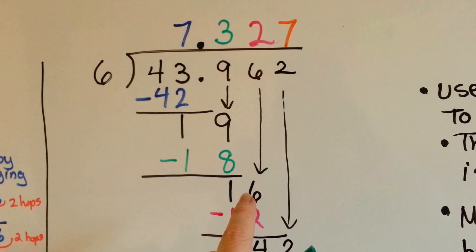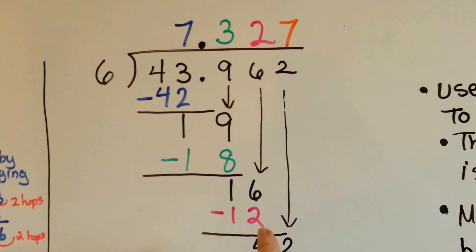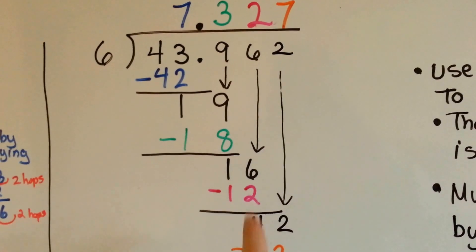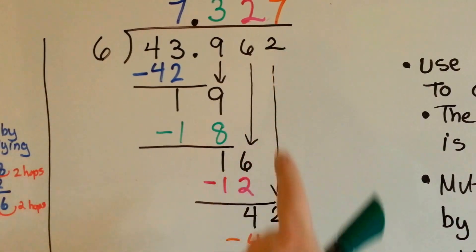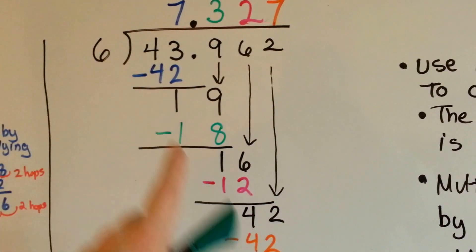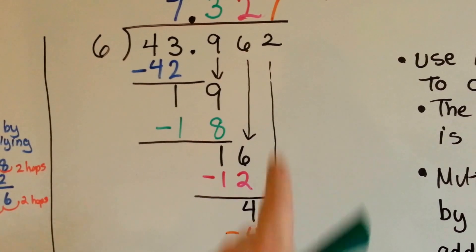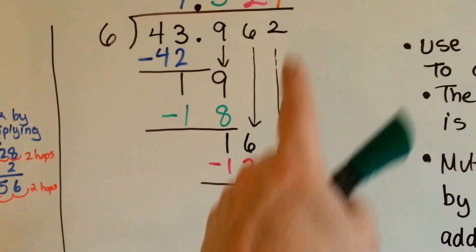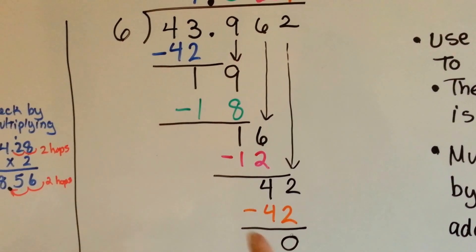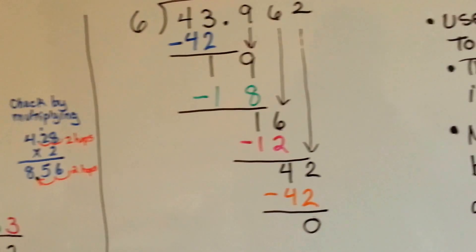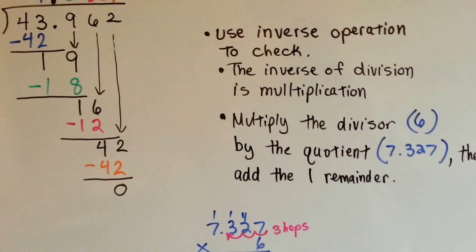It's the 6's turn to come down. How many 6's fit into 16? 2. Because 6 times 2 is 12. So we do our subtraction. We've got 4 left over. And now it's the 2's turn to come down. How many 6's fit into 42? 7. So we do 6 times 7 is 42. We do our subtraction and get 0.